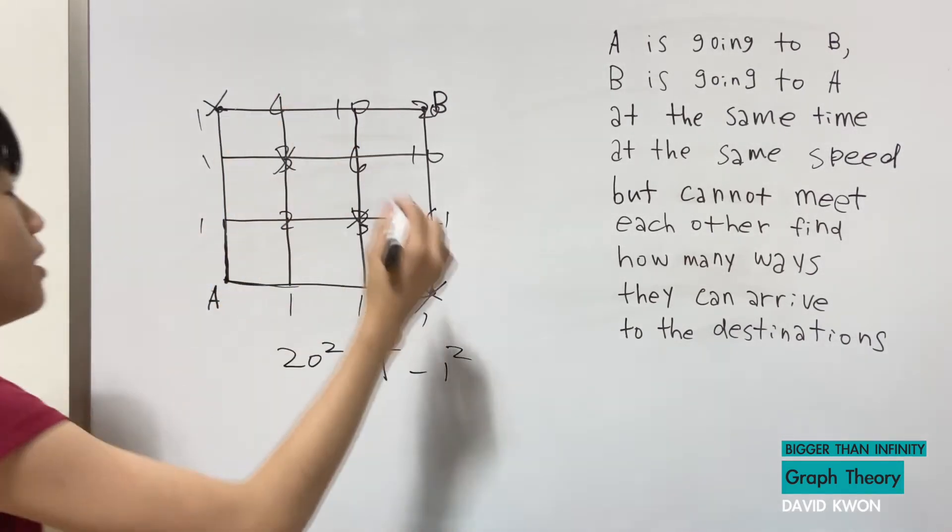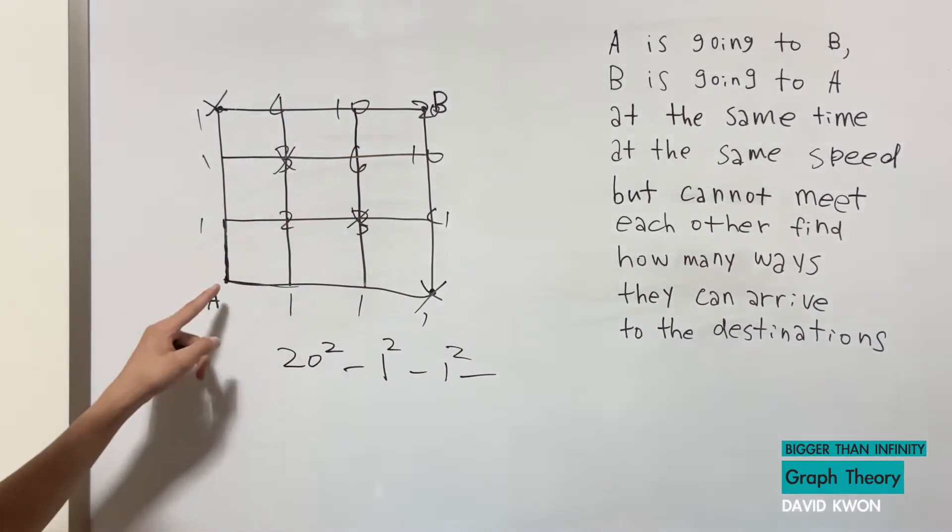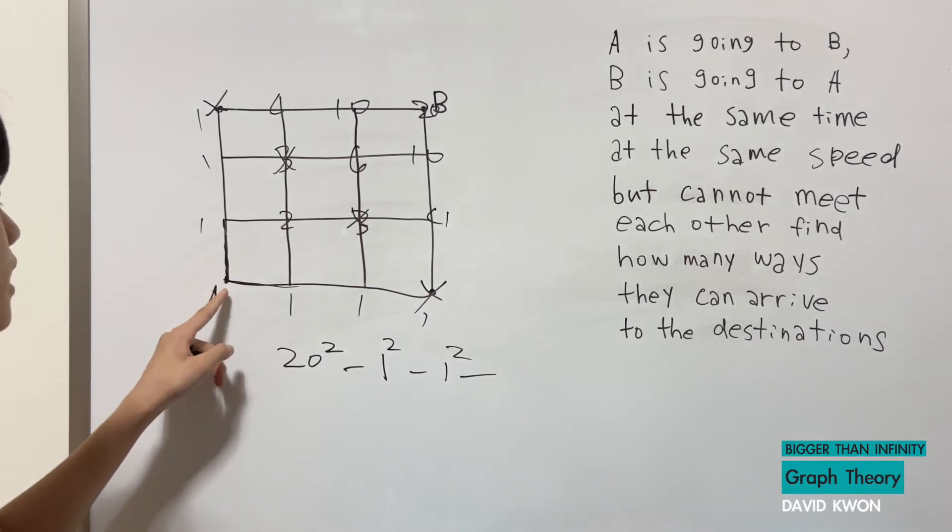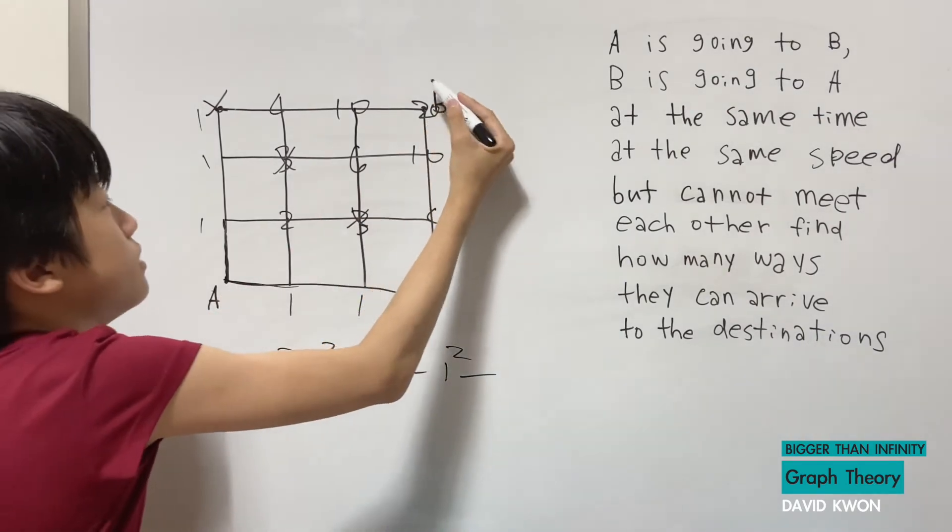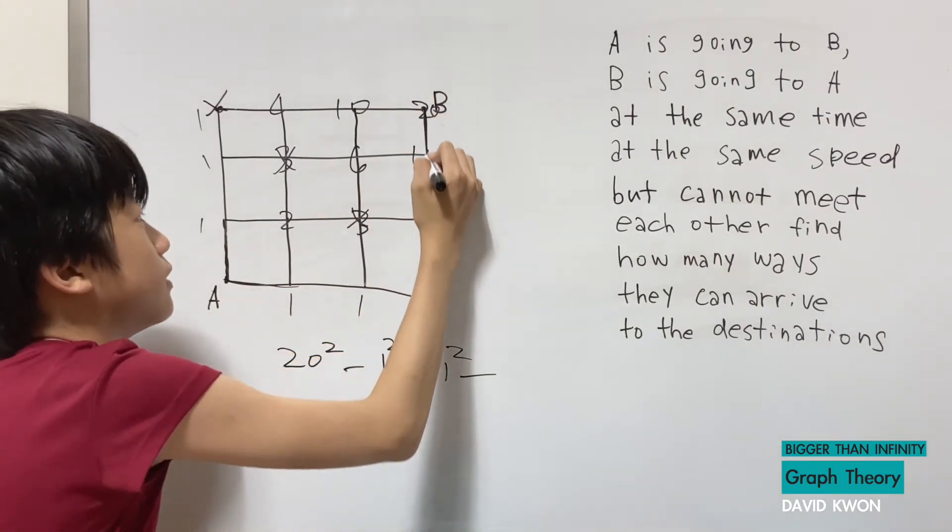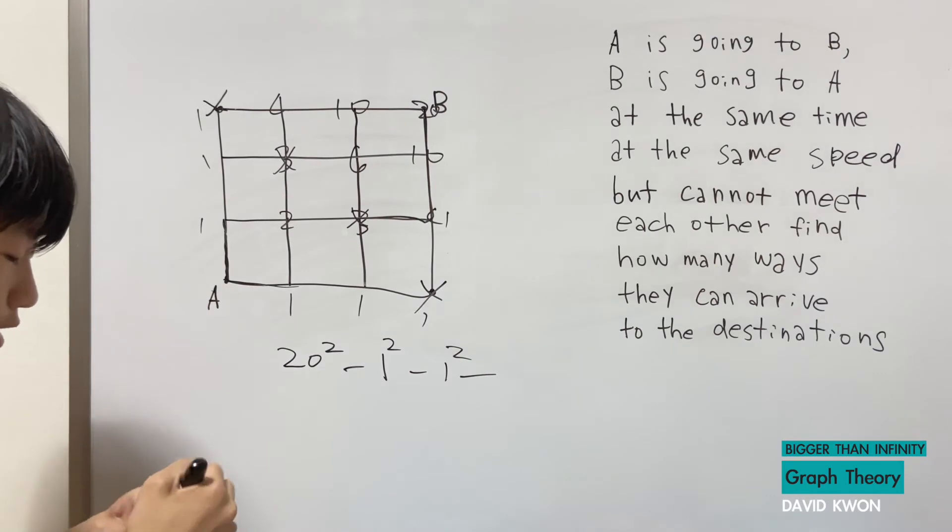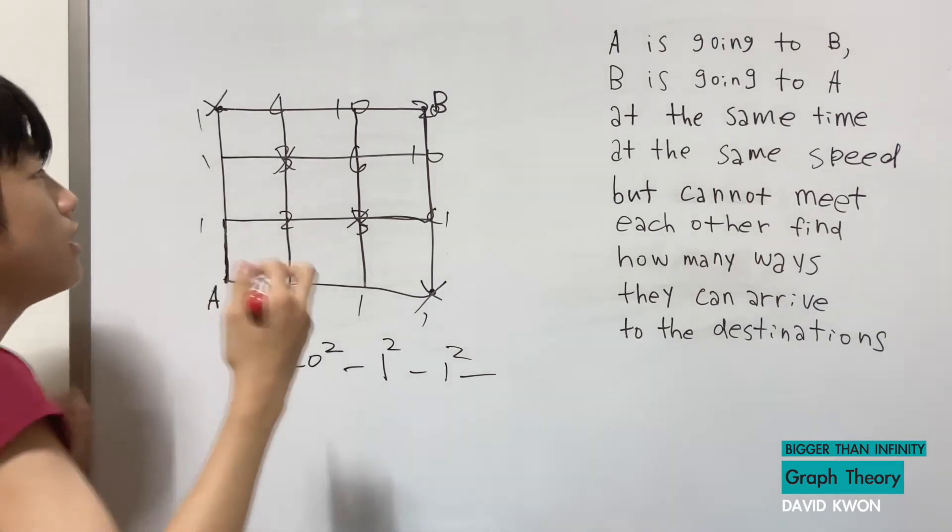one also squared for that one and minus let's see how many ways a can go here and b can go here where they meet